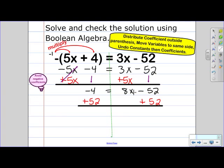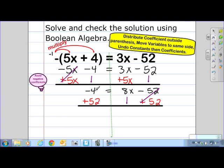I'm going to bring down my 8x. And negative 52 and positive 52 gives me a zero pair, so they're going to cancel out. So negative 4 plus 52 gives me 48.